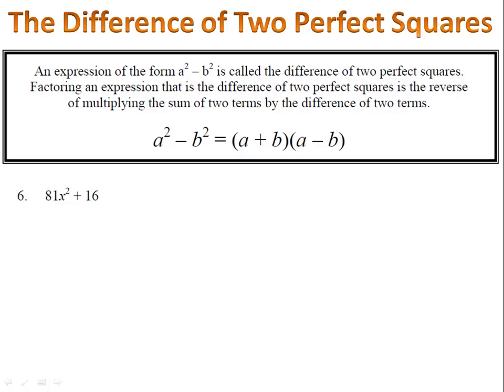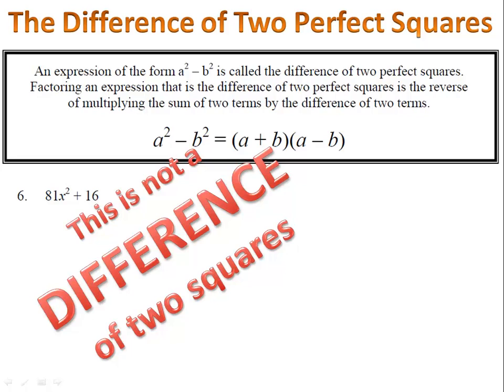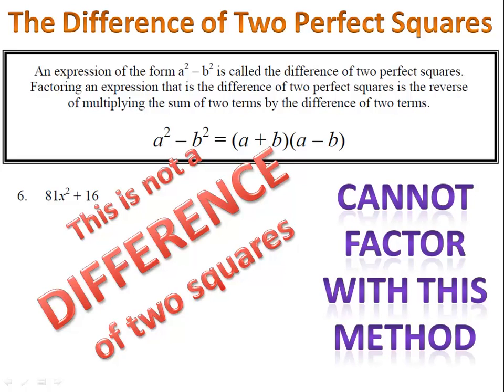Example 6 is one worth paying close attention to. Notice here that I have 81x squared plus 16. 81x squared is a perfect square, 16 is a perfect square. However, it's not a difference of two perfect squares. It has to be a perfect square minus a perfect square. We can't factor using this method. You might be able to factor using greatest common factor or some of the other tools that you have.